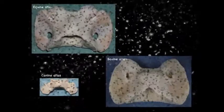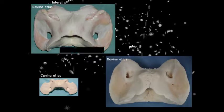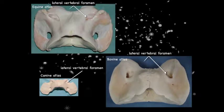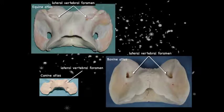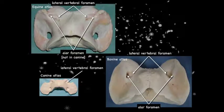Looking at the cervical vertebrae — particularly the atlas and the axis — here we're looking at the dorsal surface. The lateral vertebral foramina comes right from the vertebral canal; whenever that's present, a spinal nerve passes through it. So the first cervical spinal nerve passes through the lateral vertebral foramina. The alar foramina, which we did not see in the canine, are in the wings, and the ventral branch of the spinal nerve passes through that.